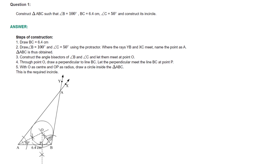Now construct the angle bisectors of angle B and angle C and let them meet at point O. To draw the angle bisector for angle B, place one end of the compass at B and draw a big arc cutting BA and BC. Take more than half the distance and draw arcs from each intersection point to get the bisector ray. Similarly, for angle C, keep the compass at vertex C and construct the angle bisector ray CO. So ray BO and ray CO meet at point O.